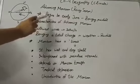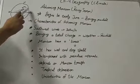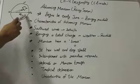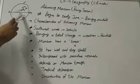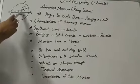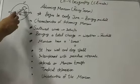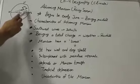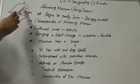The rainy season begins by early June when low pressure conditions over the northern plains attract winds from the southern hemisphere. These south-east winds originate over the southern oceans, cross the equator, and blow in the south-westerly direction, entering India as the south-west monsoons. As these winds blow over the warm oceans, they bring moisture to the Indian subcontinent.